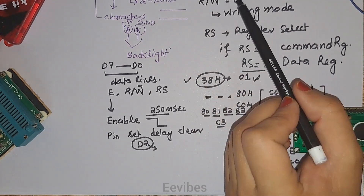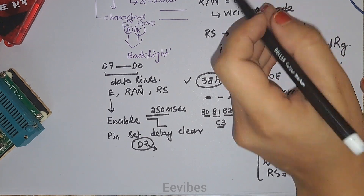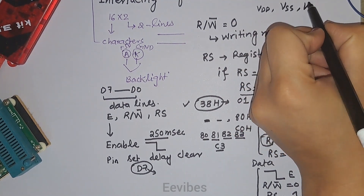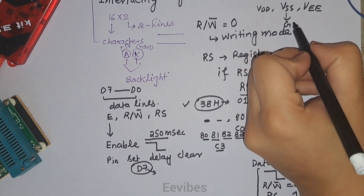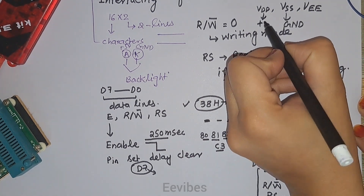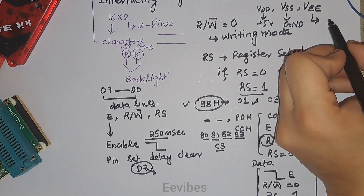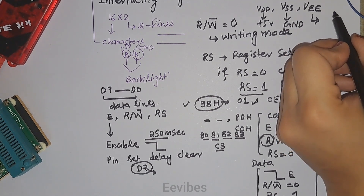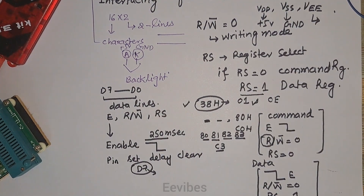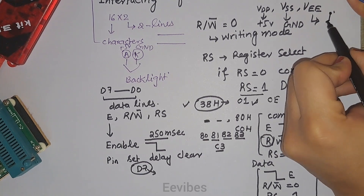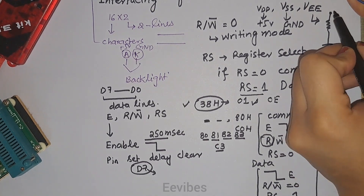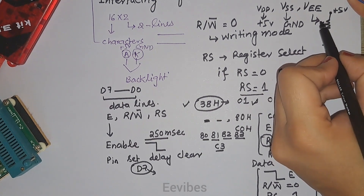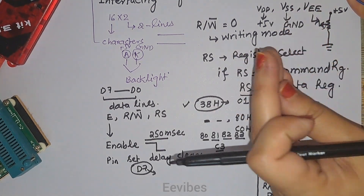Three pins are yet to be discussed: VDD, VSS, and VEE. VSS is grounded, VDD is connected with five volts. VEE is used for controlling the contrast or brightness of the LCD. We use a potentiometer for this — a variable resistor whose one terminal is grounded, the other is connected to the power supply, and its wiper is connected to VEE, controlling the contrast of the LCD.